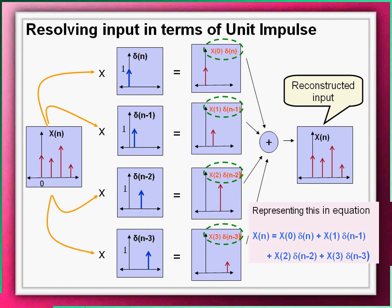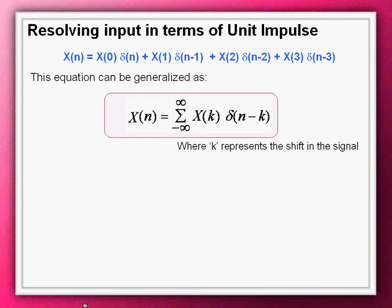Now let us generalize this equation. As we observe from the equation we just derived, each term is a product of shifted unit impulse and the sample of the input at that shift. Therefore, indicating the shift by a variable k, the product terms can be generalized as X(k) times delta(n-k). The addition operation is generalized by including a summation operator, and the limit from minus infinity to plus infinity indicates the equation is valid only for any arbitrary length of input.